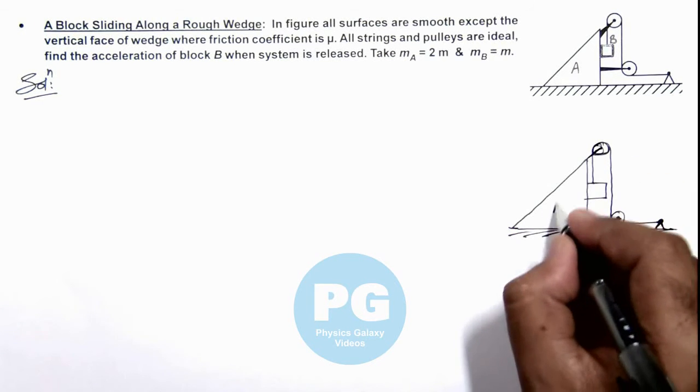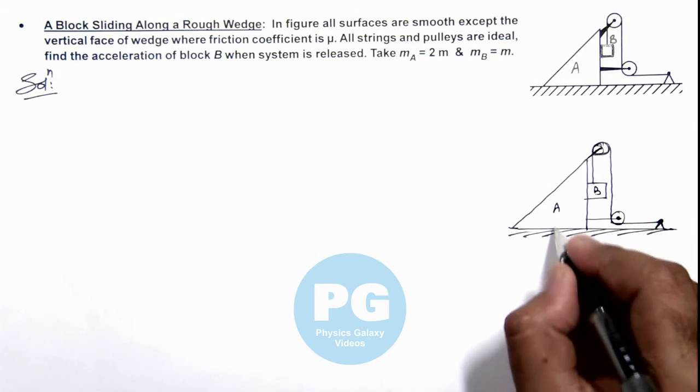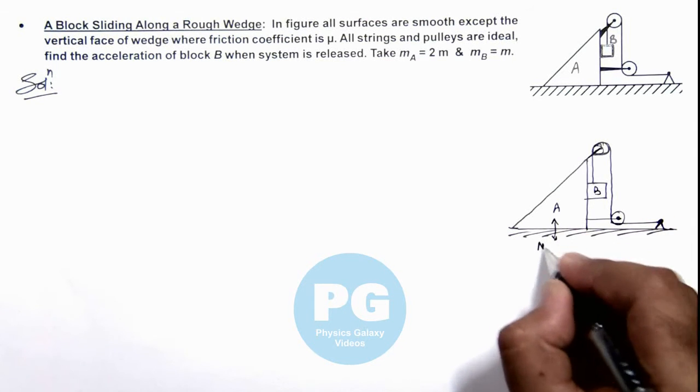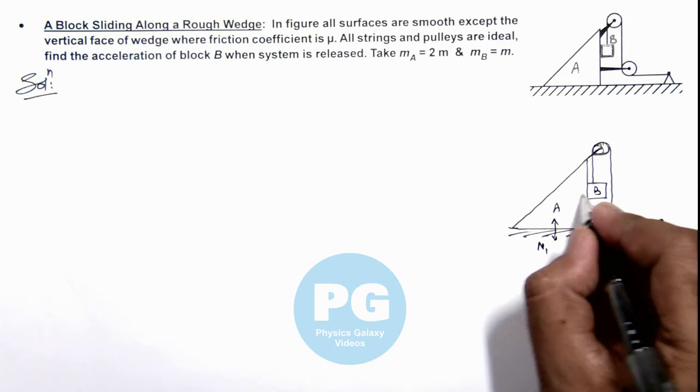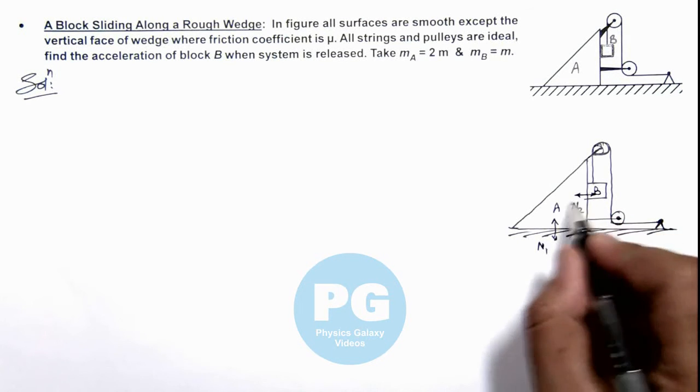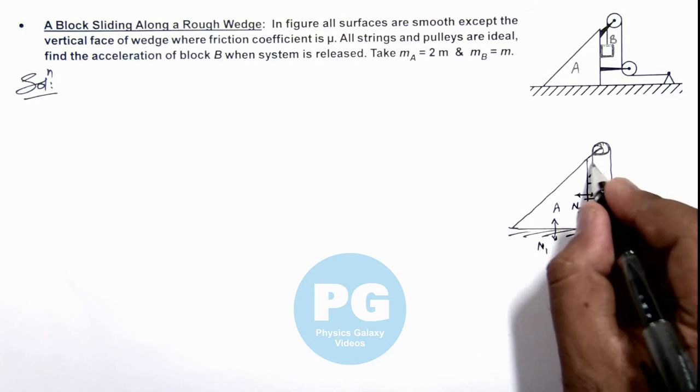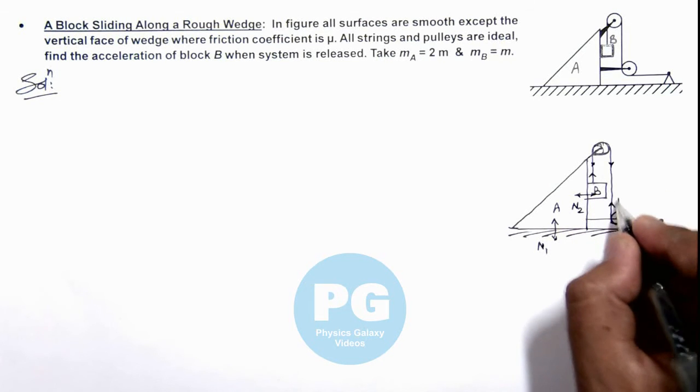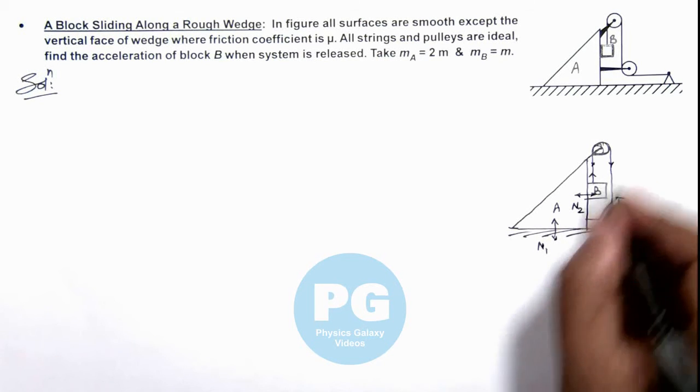Here you can see block A, block B. One normal reaction is acting at the ground, N₁. Another normal reaction is acting between block A and B, that is N₂. And everywhere in the string, tension can be taken as T as it is given as ideal.